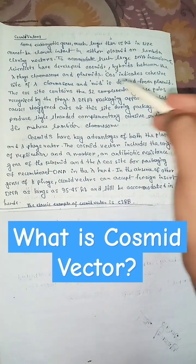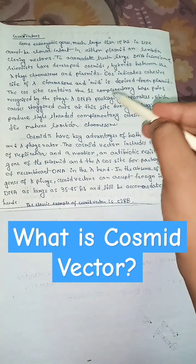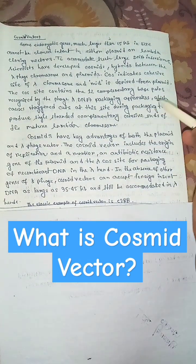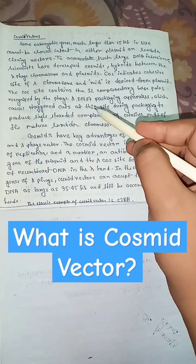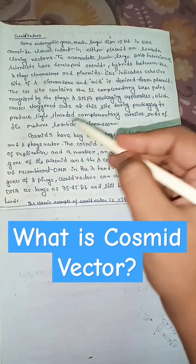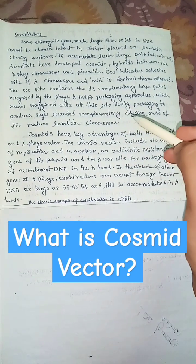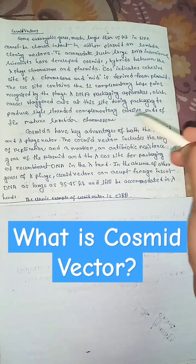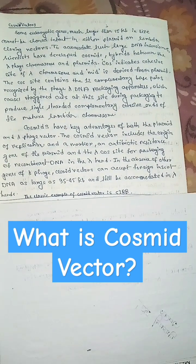Cos indicates cohesive site of lambda chromosome and mid is derived from plasmid. The cos site contains the 12 complementary base pairs recognized by the phage lambda DNA packaging apparatus, which causes staggered cuts at this site during packaging to produce single-stranded complementary cohesive ends of the mature lambda chromosome.